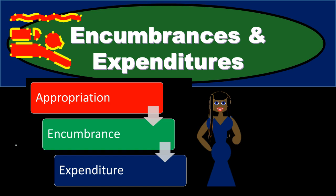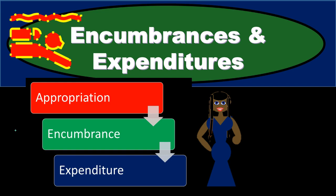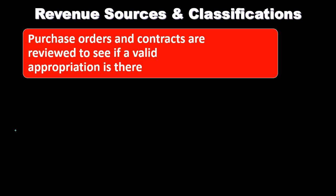This is usually one of the more confusing processes, and it's one that we'll spend a lot of time on. It makes a lot more sense once we go through examples and actually post the budgetary account for appropriations, post the encumbrances, and then the related expenditures. We'll go through it in words first, then work through examples, and that's when it'll really get more concrete.